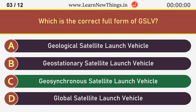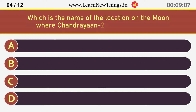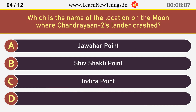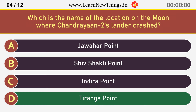Geosynchronous Satellite Launch Vehicle. Which is the name of the location on the moon where Chandrayaan-2's lander crashed? Tiranga Point.